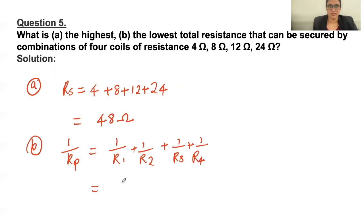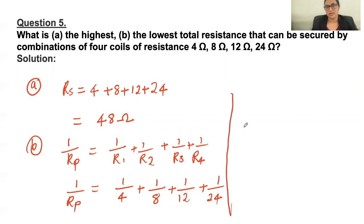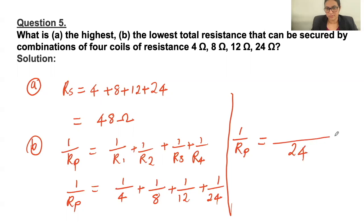So what do we get here? Taking 24 as a common factor, we get 6 + 3 + 2 + 1 over 24, which equals 12/24. So 1/Rp = 1/2, giving Rp = 2 ohm.